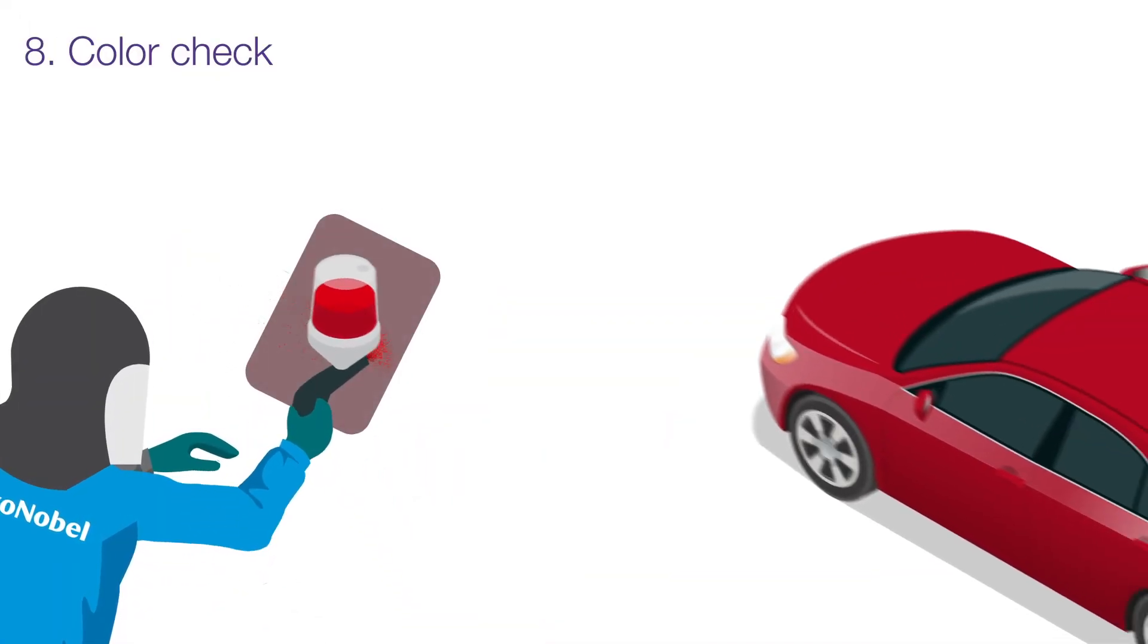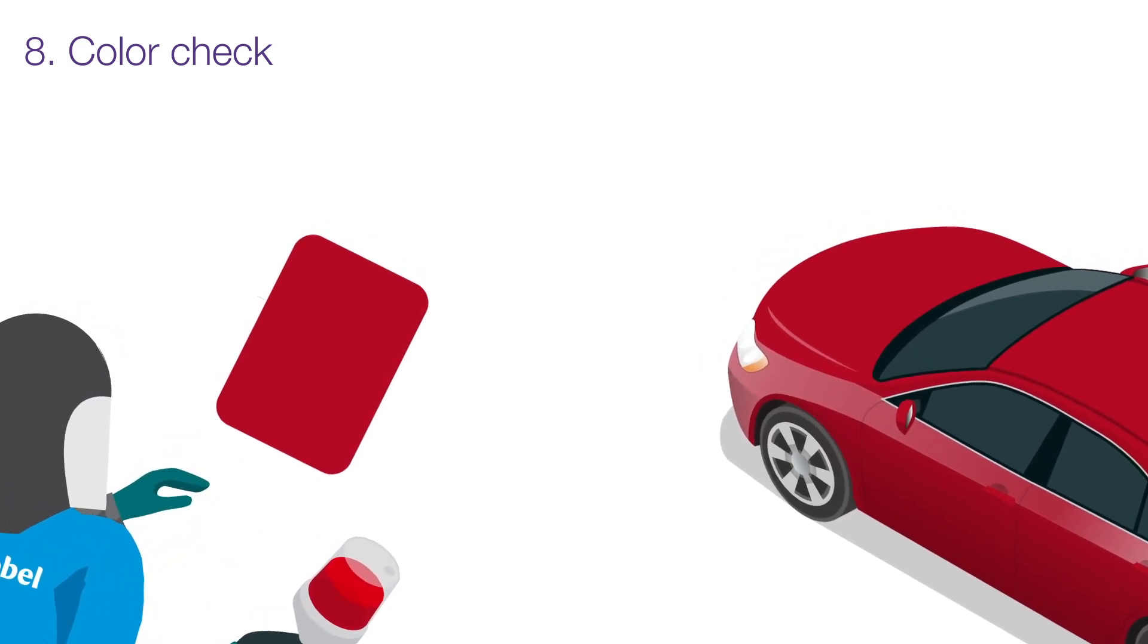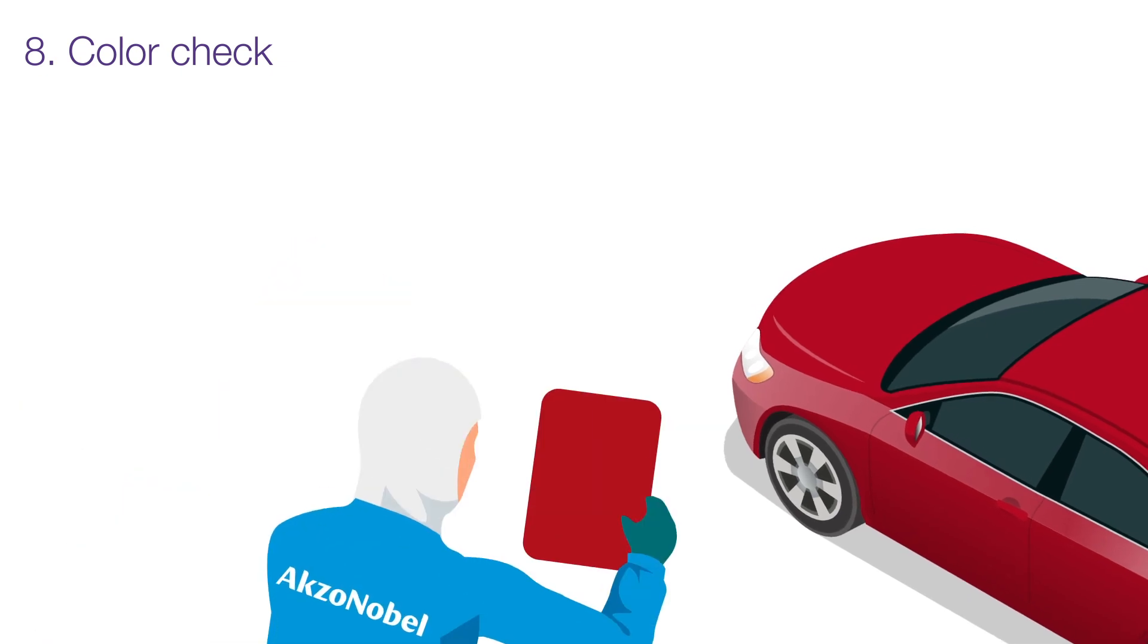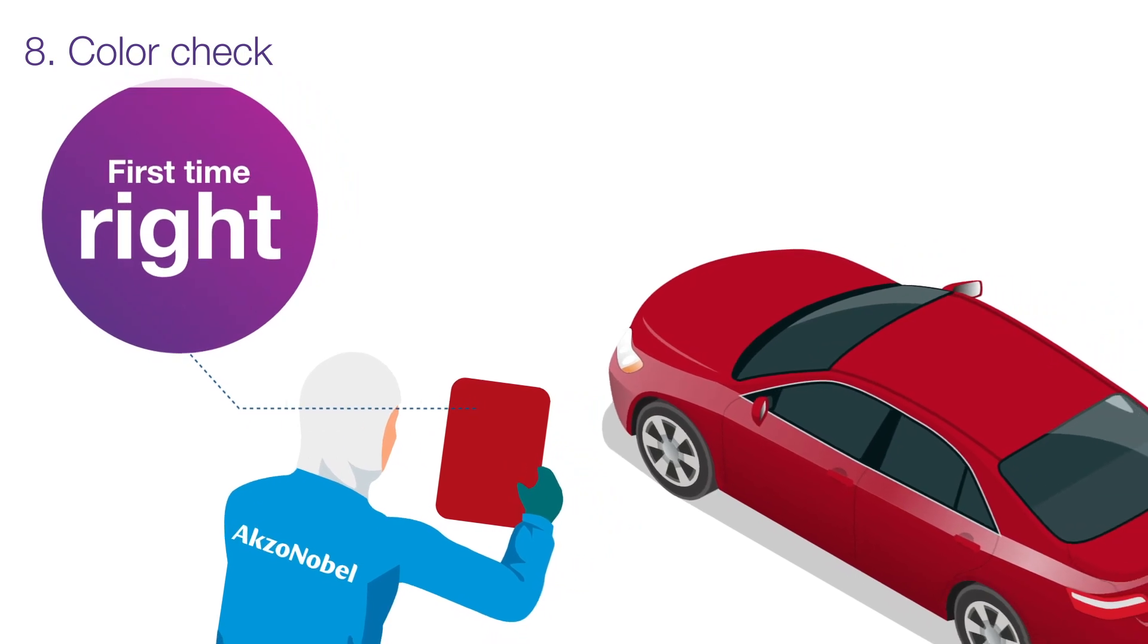Correcting an imperfect repair is more costly than getting it right the first time. And even experienced painters may want to check the color before application. A spray-out card can be compared to the vehicle just to be sure that it's the right color.